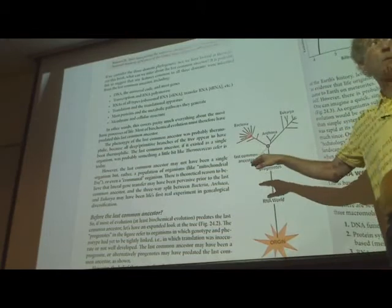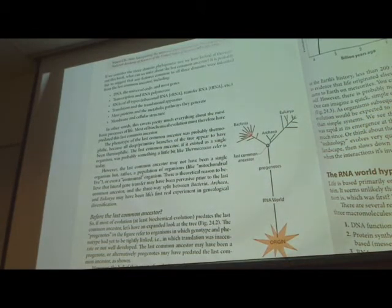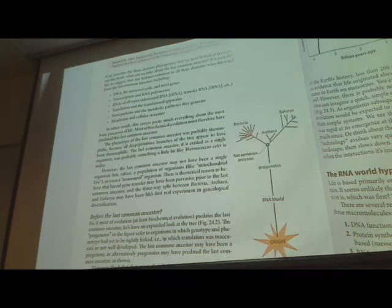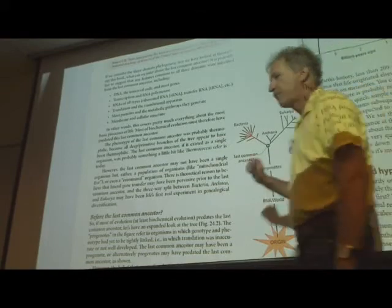Because the ribosome was a pretty complicated machine, right? There had to have been a simpler state before that. What it was like is unclear. Before that, many folks will argue there had to have been a thing called the RNA world.